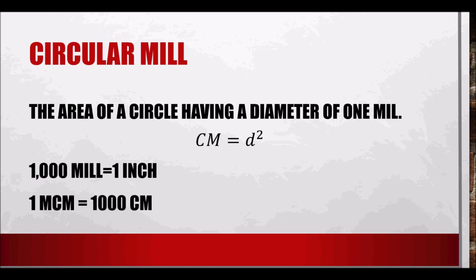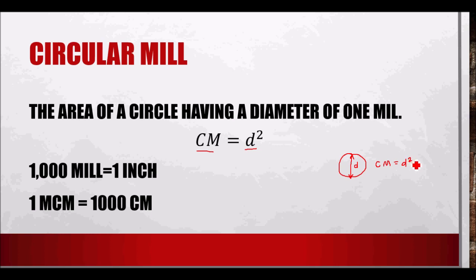The formula for circular mil is: CM = d², where d is the diameter in mils. For the cross-sectional area of a wire (which is circular), we use this formula to get the circular mil value. One thousand mils is equal to one inch.